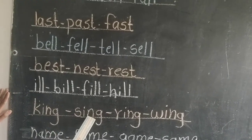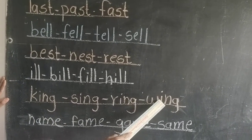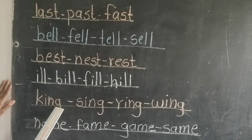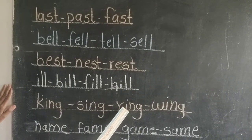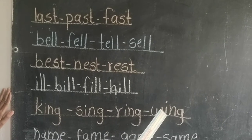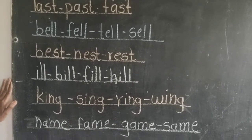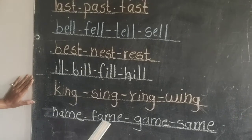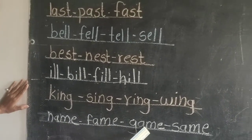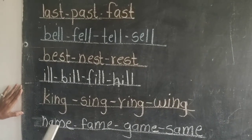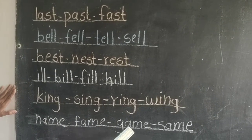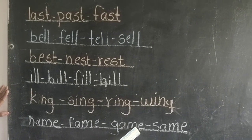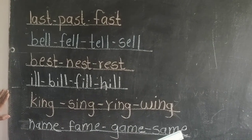King, sing, ring, wing. K-I-N-G king, S-I-N-G sing, R-I-N-G ring, W-I-N-G wing. Name, fame, game, same. N-A-M-E name, F-A-M-E fame, G-A-M-E game, S-A-M-E same.